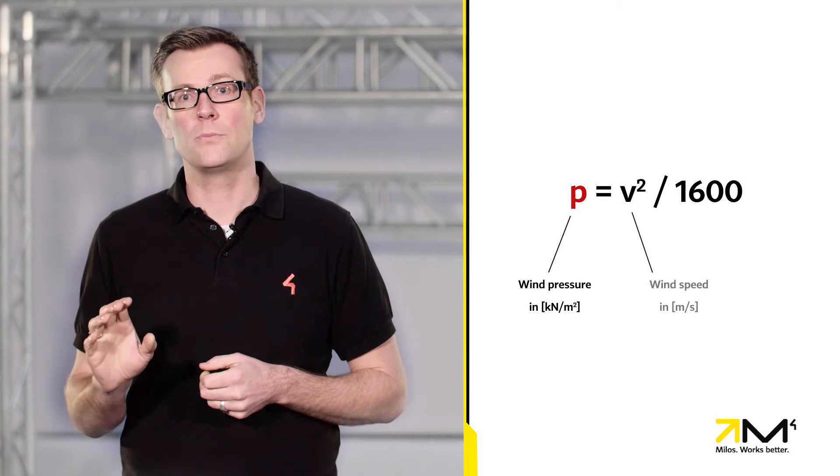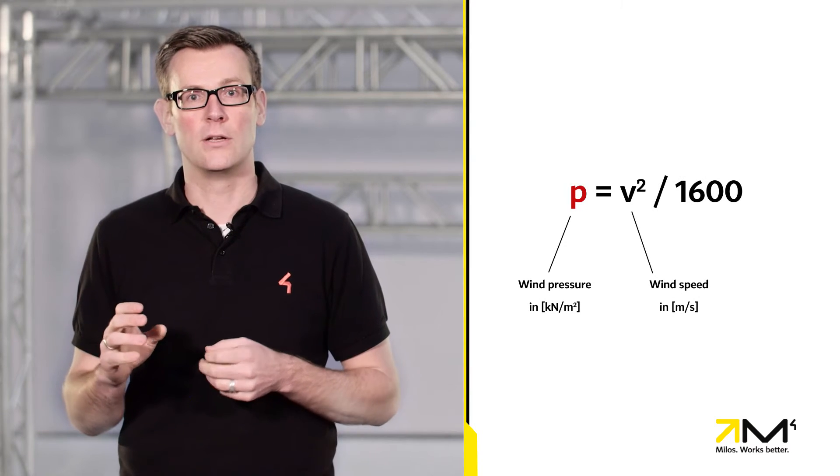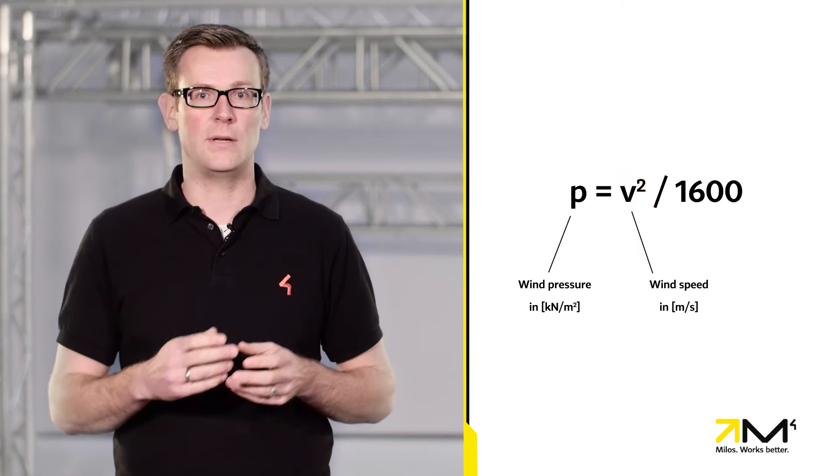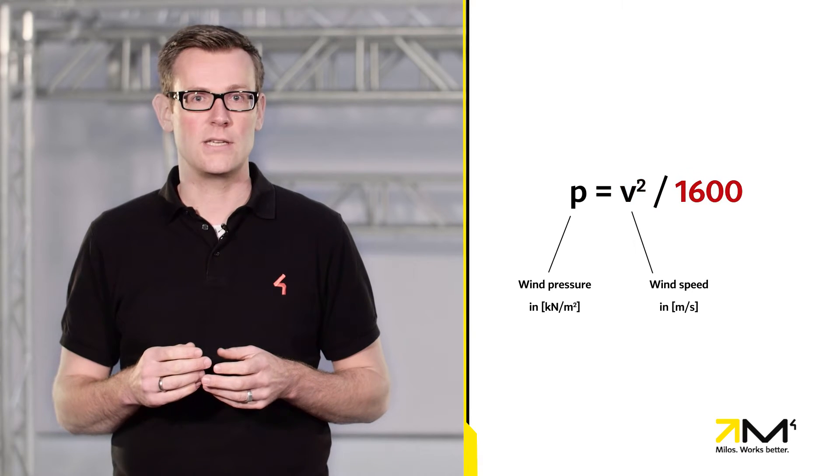The first point is the relationship between wind speed and the resulting wind pressure. Wind pressure can be calculated with the following formula. The pressure in kN per square meter is equal to the squared wind speed in meters per second divided by 1600.